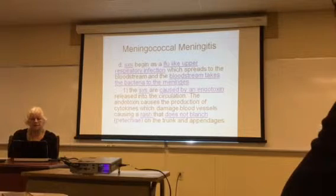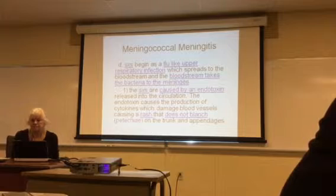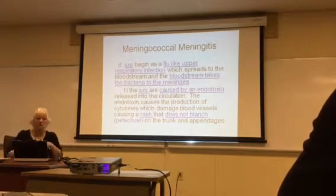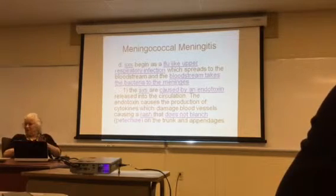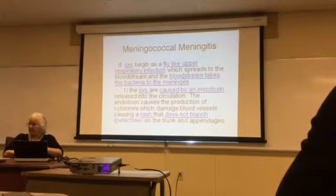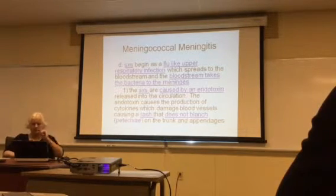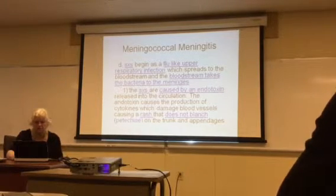The cytokines damage blood vessels, causing a rash that you see on the skin. This rash doesn't blanch — meaning if you press on it, unlike a sunburn where pressing turns it white and it goes red again, with this rash you press on it and it doesn't blanch or turn white. It just stays red. This rash appears on the trunk and appendages.